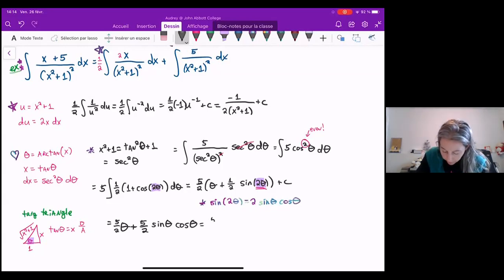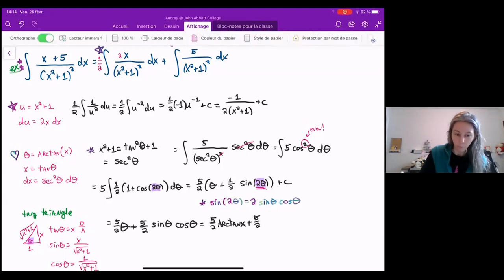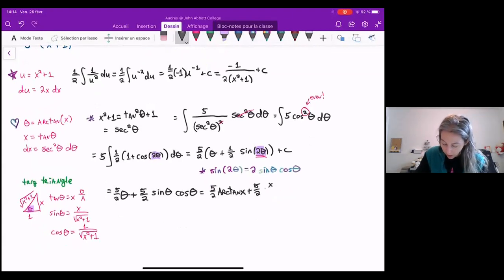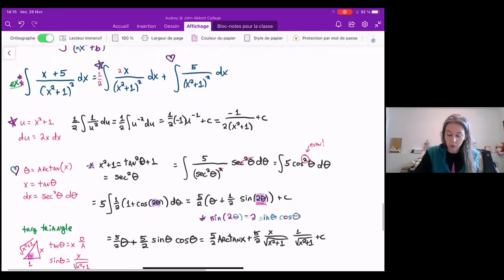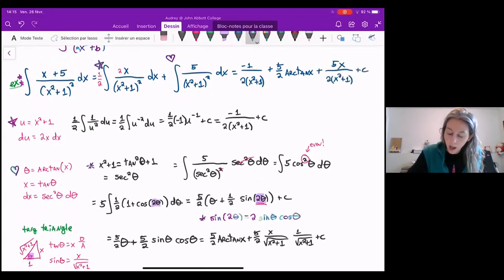Well I know that my theta is arctangent, so this is 5 over 2 arctangent of x plus 5 over 2 sine theta is opposite over hypotenuse. So that's x over the square root of x squared plus 1. And cosine theta is adjacent over hypotenuse, so that's 1 over the square root of x squared plus 1. So then we have 5x over 2 times x squared plus 1 plus a constant. Now I need to go and combine star and heart back together. So I end up with my final answer of negative 1 over 2 times x squared plus 1 plus 5 over 2 arctangent of x plus 5x over 2 times x squared plus 1 plus c. And that's my final answer here.